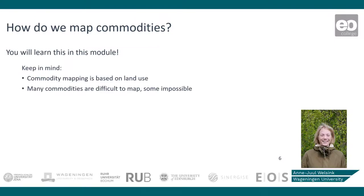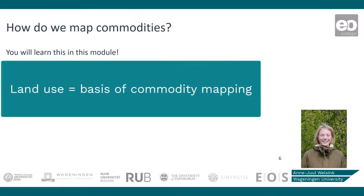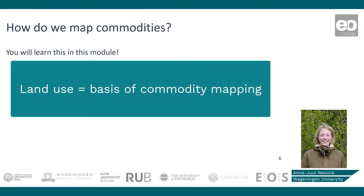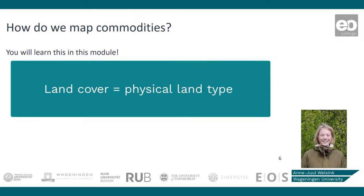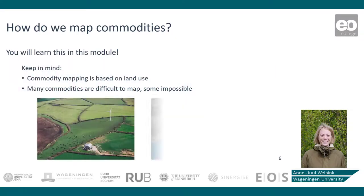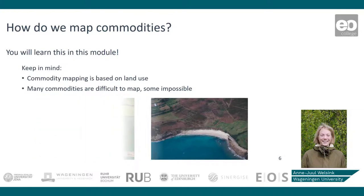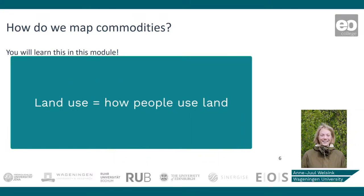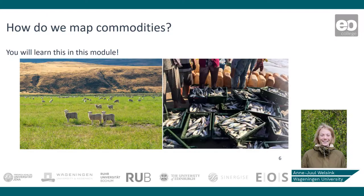In this module you will learn important skills to get started on commodity mapping. Two things are important to keep in mind. First of all, land use forms the basis of commodity mapping. Other than land cover maps which show the physical land type — for example grassland and water — land use maps indicate how people use an area, for example for livestock grazing or fishery.